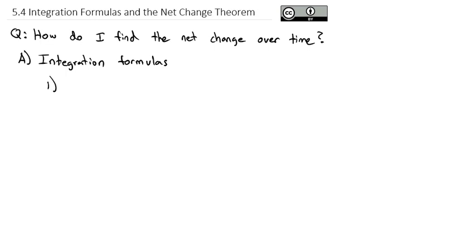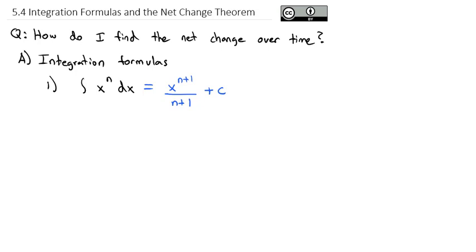The first one is the integral of x to the n dx — the exponent rule. We just need to raise that exponent by 1 and then divide by the new exponent. Also remember that we need the plus C. Whenever we have an indefinite integral, we don't have limits of integration, so we're going to have a constant that could be added to our antiderivative.